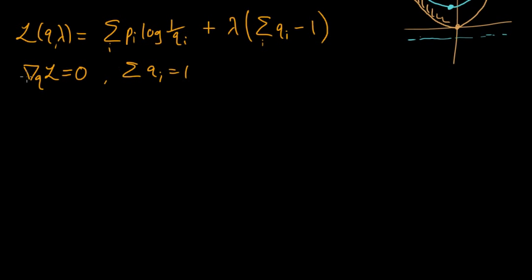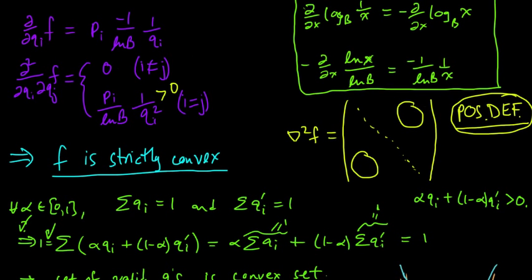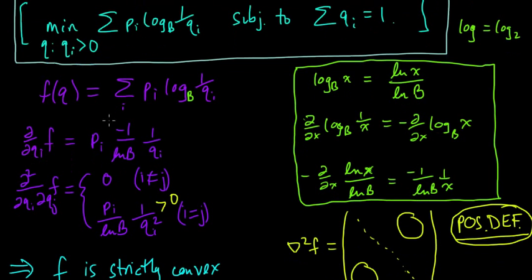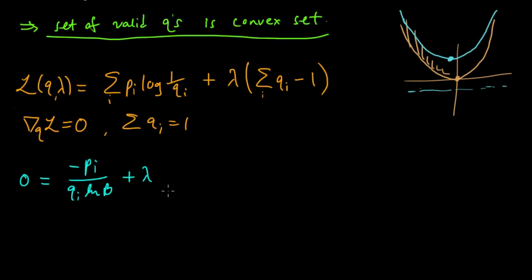So let's try to solve these equations. We need to take the gradient with respect to q — we've already taken the derivative of f, and we just also have to take the derivative of the constraint. So we get minus pi over (qi · log b). Then we take the derivative of the constraint term, which gives us plus lambda. We set that equal to zero for all i, differentiating with respect to qi, and we just get one lambda.